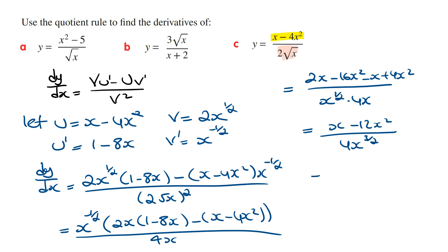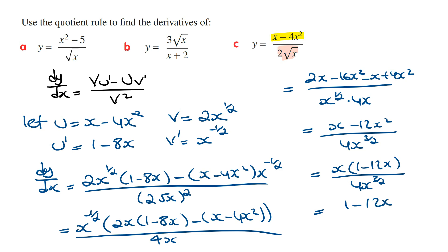We can take out x as a common factor from the numerator, giving x times 1 minus 12x over 4 times x to the power of 3 on 2. The x's cancel out, and so the final answer is 1 minus 12x over 4 times x to the power of a half, which is the same as 4 times the square root of x.